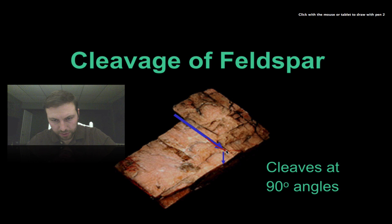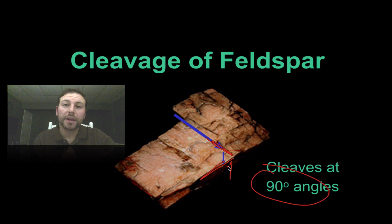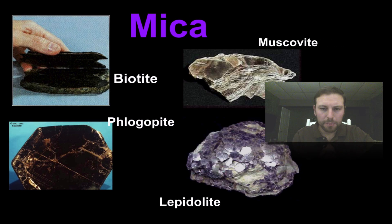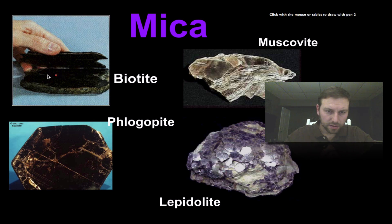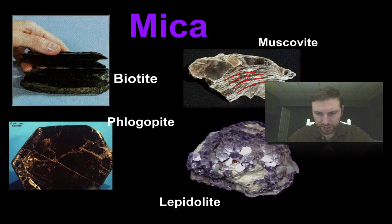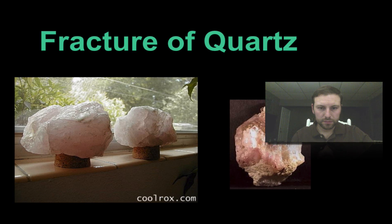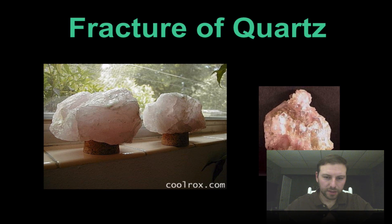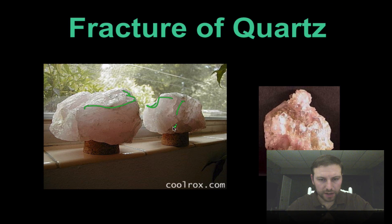Feldspar breaks at 90-degree angles, and the Earth Science reference table confirms this. Mica and its many different types break apart in even planes — you can see it breaking off in sheets. Quartz, on the other hand, has fracture: jagged edges with no rhyme or reason. This will become more clear when we look at these samples in class.